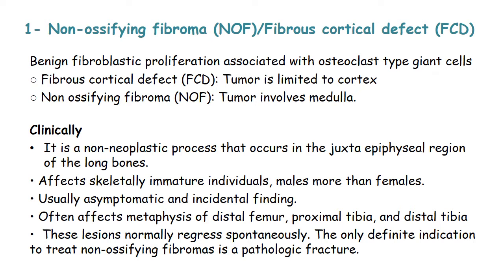Starting with the first example of fibrous bone tumor: non-ossifying fibroma, or fibrous cortical defect. Both are the same lesion; however, fibrous cortical defect affects only the cortex of bone, while non-ossifying fibroma affects the cortex in addition to the medulla. The lesion is a benign fibroblastic proliferation associated with osteoclast-type giant cells, and it is included in the differential diagnosis of giant cell-rich bone lesions.